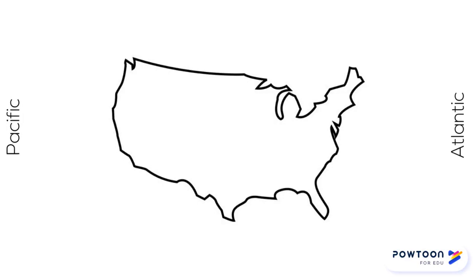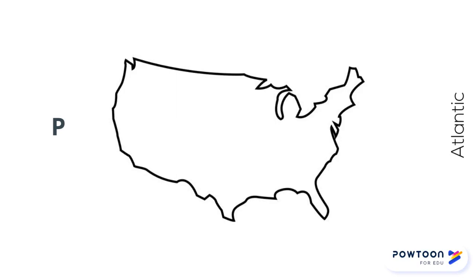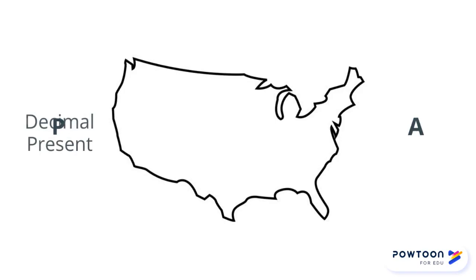And you may be thinking, what does this have to do with numbers? And rightfully so, but hang with me. Instead of Pacific, let's write the letter P. And on the other side, let's represent the Atlantic with the letter A. Now I'm going to write 'decimal present' where Pacific used to be and 'decimal absent' on the Atlantic side, and we're ready to start counting.